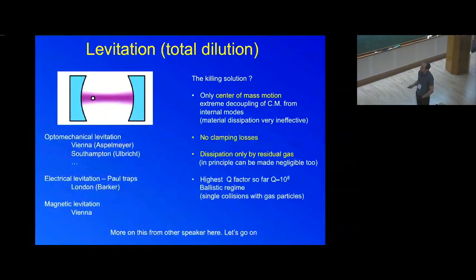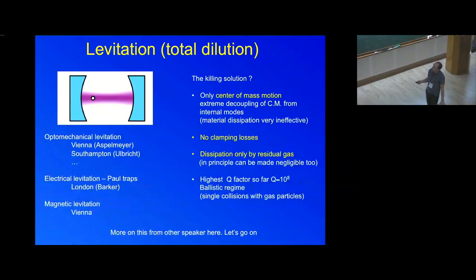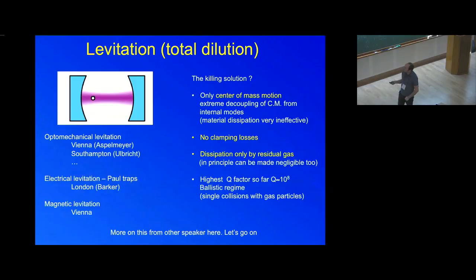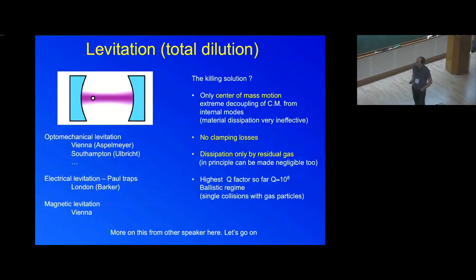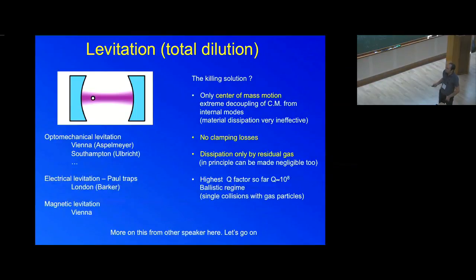Levitation is essentially total dissipation dilution. You have removed completely the elastic part of the spring constant — you have only a particle whose center of mass moves inside an externally applied potential, which can be completely lossless. If you have an optical spring, it should be lossless. In principle these systems are limited only by the residual gas, and you can easily achieve quality factors of 10 to the 8, or much larger if you remove the gas completely.